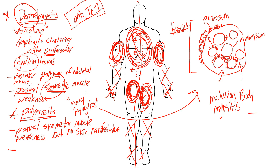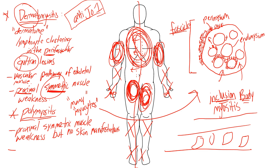With inclusion body myositis, the title pretty much tells you: you're going to have inclusion bodies in the muscle cells. On a histology slide of a muscle fiber you'll see what are called rimmed vacuoles — little clusters inside the muscle cells. These are not functioning vacuoles; they don't store anything in the normal sense. They are really just areas of broken-down, damaged, and misfolded protein.